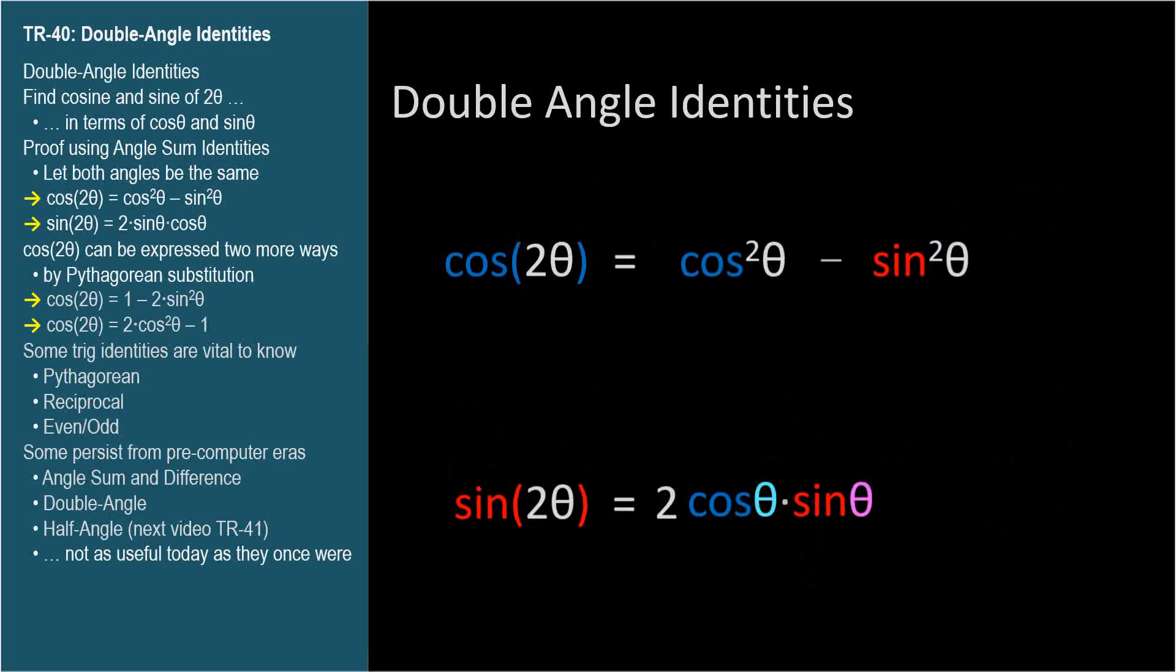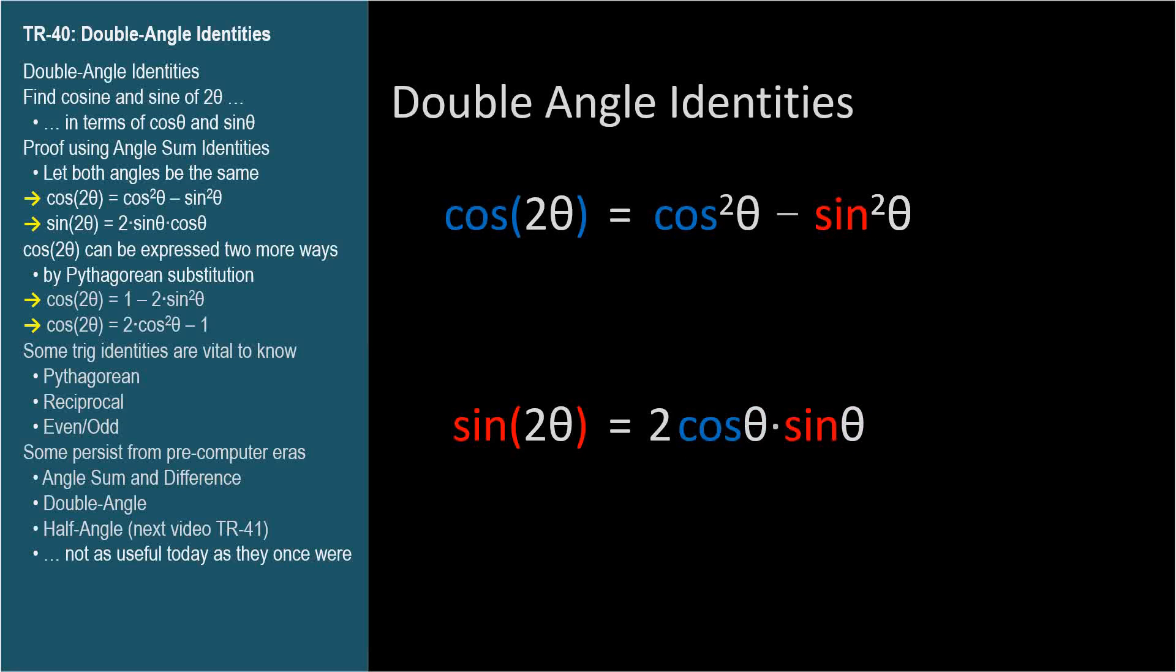You'll see the double angle identity for cosine written a few more ways. It's cosine squared θ minus sine squared θ. And we can replace cosine squared θ with 1 minus sine squared θ. This leaves 1 minus sine squared θ minus sine squared θ, which is 1 minus 2 sine squared θ.